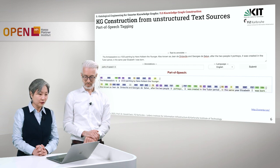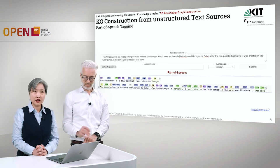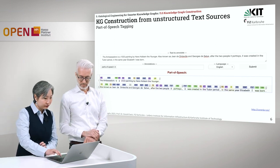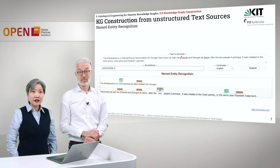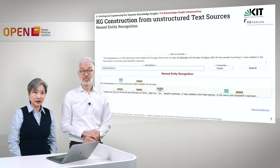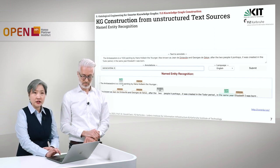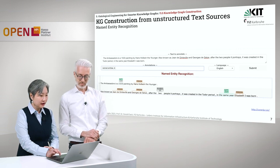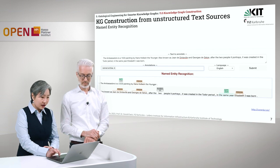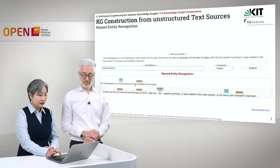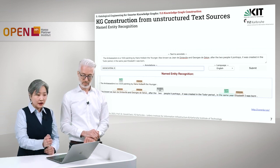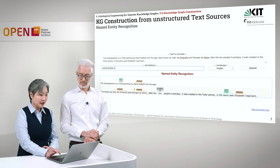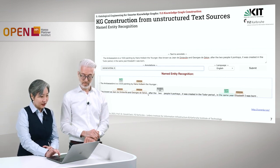Here we are using Stanford CoreNLP to illustrate how each NLP technique works. The next thing we are showing is named entity recognition, where you look at each token and determine the entity category it corresponds to. For example, 1533 is considered a date, and Hans Holbein the Younger refers to the category person. You can also see two as a number and Elizabeth I as a person.